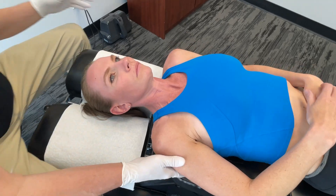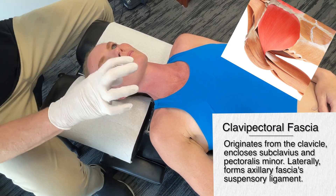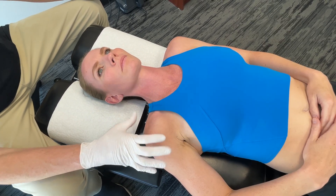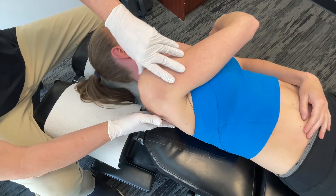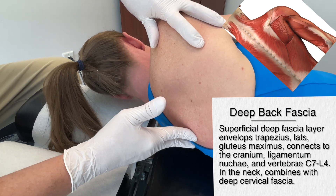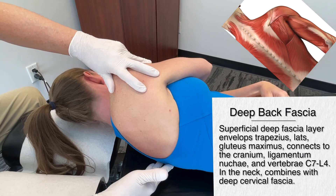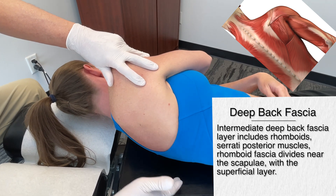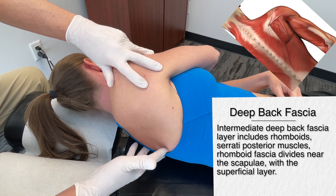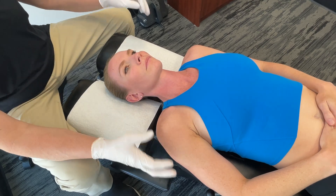Then we have what we call the clavicular pectoral fascia. Realize these are all completely interconnected. Looking at the back muscles, the superficial layers envelope the trapezius muscle and the large latissimus dorsi. Getting a little deeper, it fuses right into the rhomboid muscles and the serratus posterior superior — and inferior. So we start to see that these seemingly independent structures all affect one another because they're all connected with fascia.